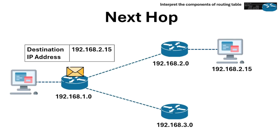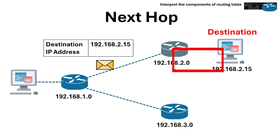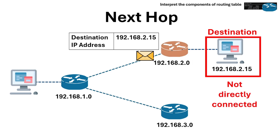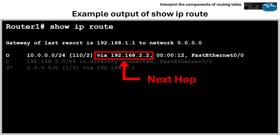Next is the next hop. The next hop is the IP address of the next router that will move the packet closer to its destination. If the destination network isn't directly connected, the router must forward it to another router. For example, in this routing table for the OSPF entry, the next hop for the 10.0.0.0/24 network is via 192.168.2.2, which means send the packet to the router at 192.168.2.2, and it knows where to go next.